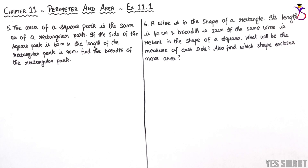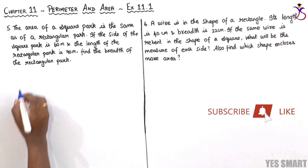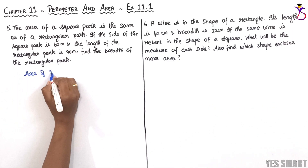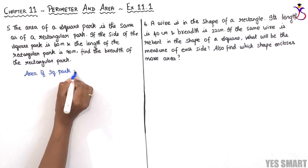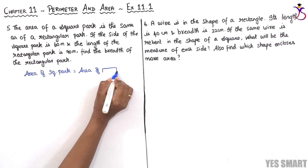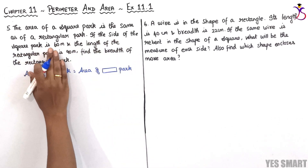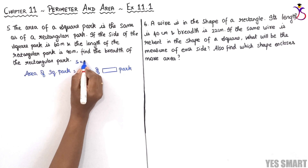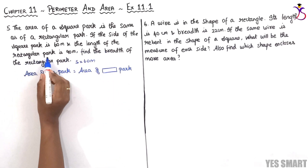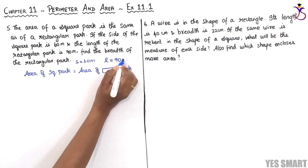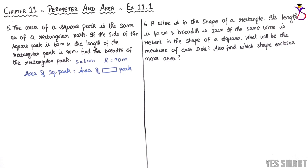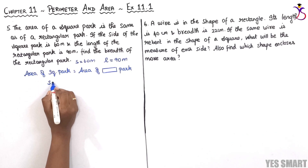In the fifth sum, the area of a square park is the same as that of a rectangular park. So we equate: area of square park equals area of rectangular park. The side of the square park is s equals 60 meters, and the length of the rectangular park is L equals 90 meters. We have to find the breadth of the rectangular park.